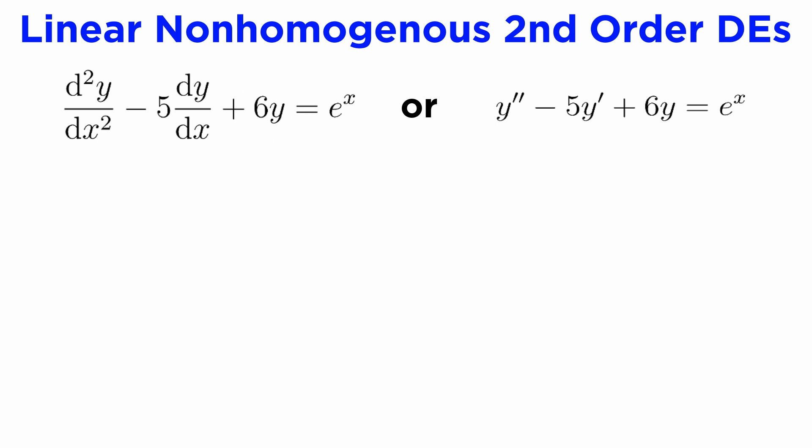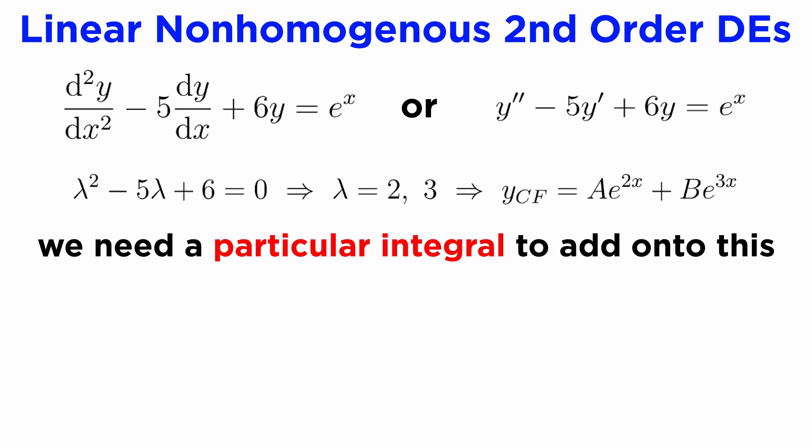Let's suppose we want to solve the DE y'' - 5y' + 6y = e^x. If we ignore the right side of this equation, we can solve the resulting homogeneous case. The roots of the characteristic equation are 2 and 3, which are real and distinct, so our complementary solution will be Ae^(2x) + Be^(3x). This is not the full general solution, as we still need to find a particular integral to add on to this.